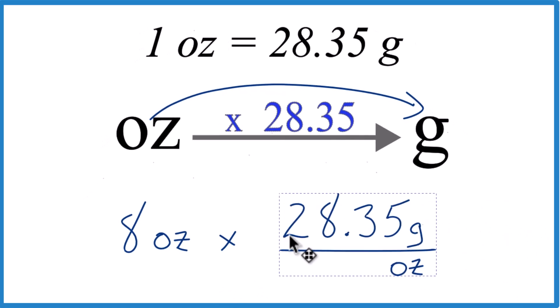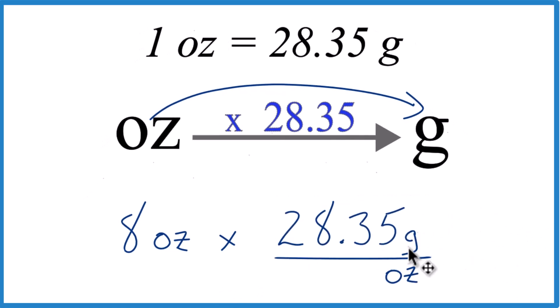So we have 8 ounces. We multiply that by 28.35, and the units are grams per ounce because there are 28.35 grams in one ounce.